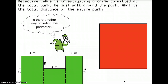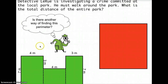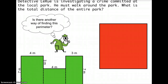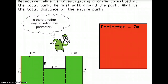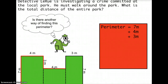Another example: Detective LaRue is investigating a crime committed at the local park. He must walk around the park and we are given the diagram of the park. What is the total distance of the entire park? So if Detective LaRue is going to walk around this park, what is the total distance? Let's do it one side at a time. First is this side — we know it's 7 meters, so perimeter equals 7 meters. Then this side is 4 meters, so let's add 4 meters. Then this side that's 3 meters, let's add that.